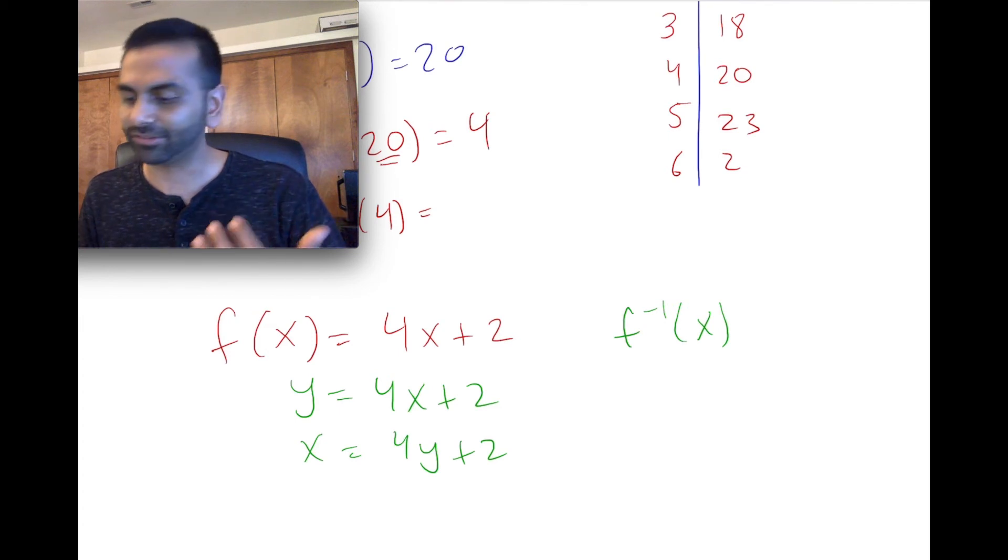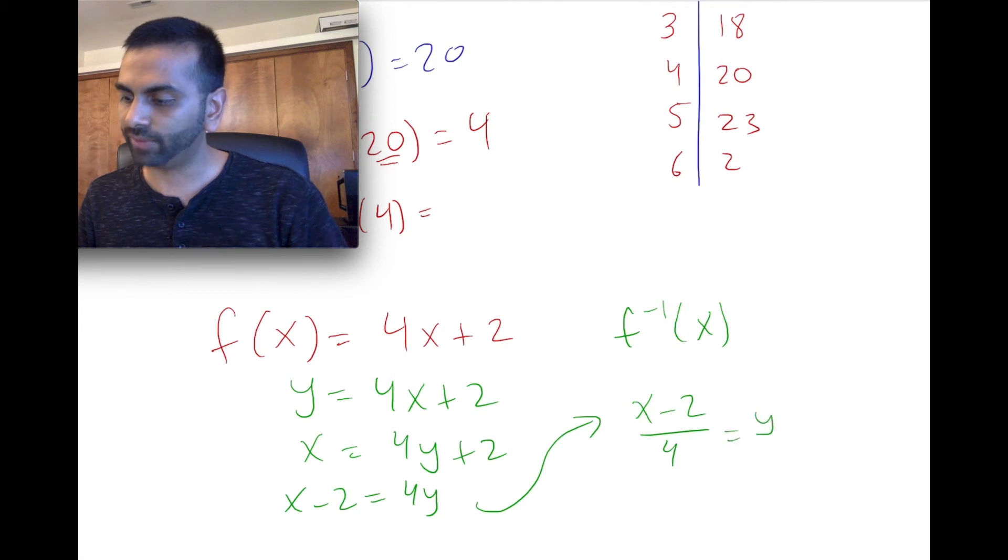So what would we do? Regular equation solving thing. Subtract 2 from both sides. x minus 2 is 4y. And divide both sides by 4, so you get x minus 2 all over 4 equals y, which, of course, if you want, you can simplify as x over 4. So 1 fourth x minus 2 over 4, which is a half, equals y.